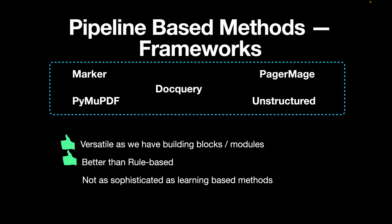Python frameworks for pipeline-based methods include Marker, PyMuPDF, PageImage, and Unstructured. One advantage of these frameworks is that they are versatile, with building blocks or modules, and they are better than rule-based because they can work with image-based PDFs, not just text-based PDFs. However, one drawback is that they are not as sophisticated as learning-based methods.